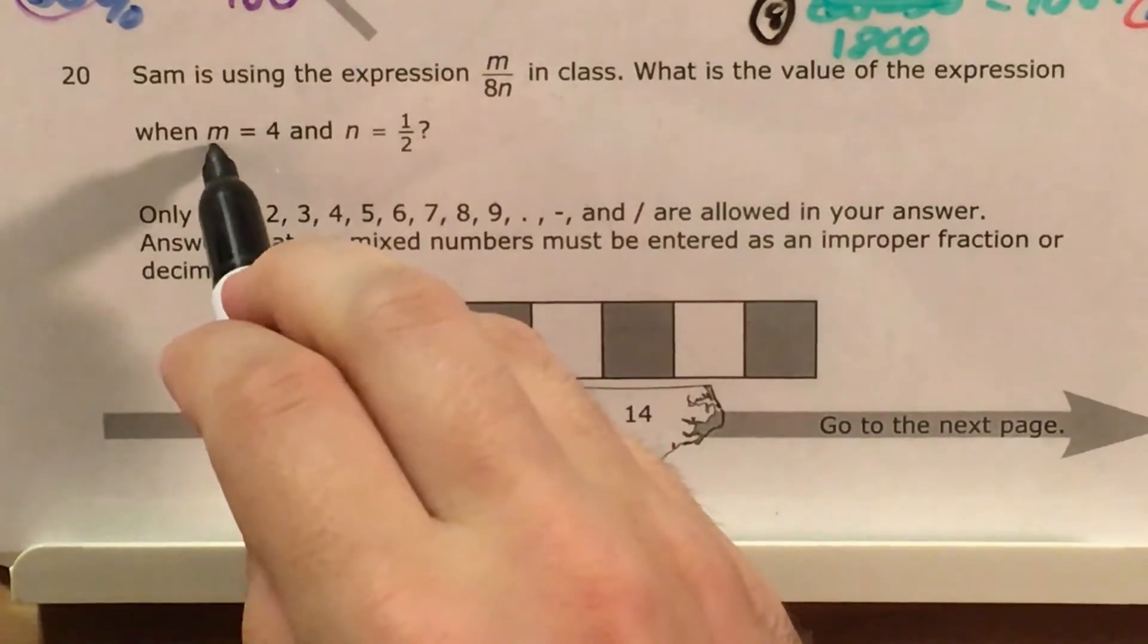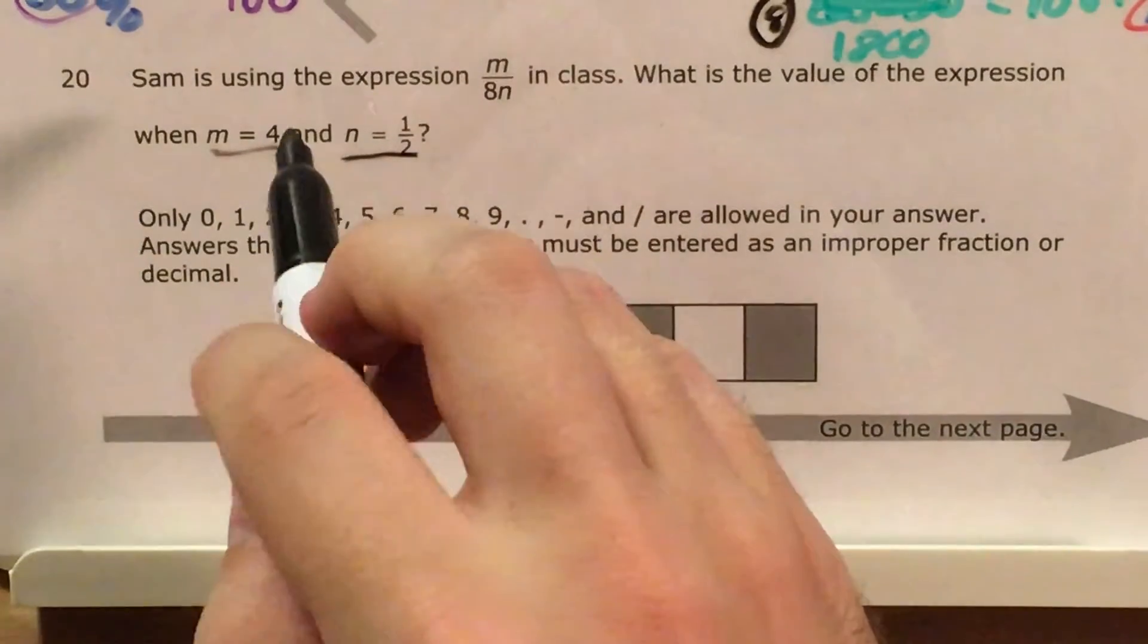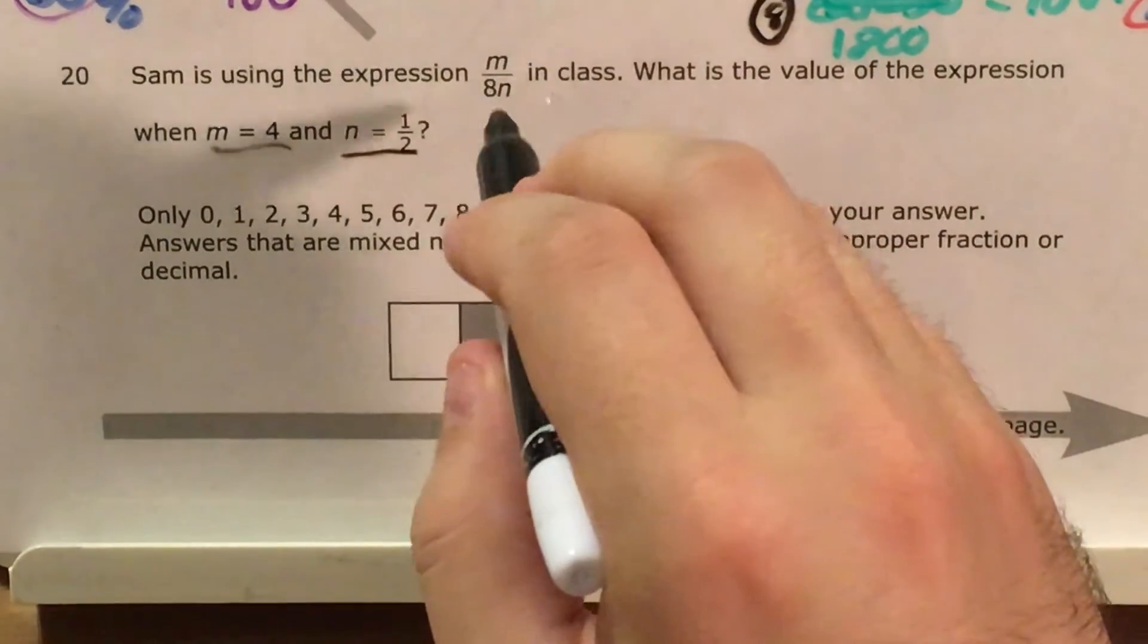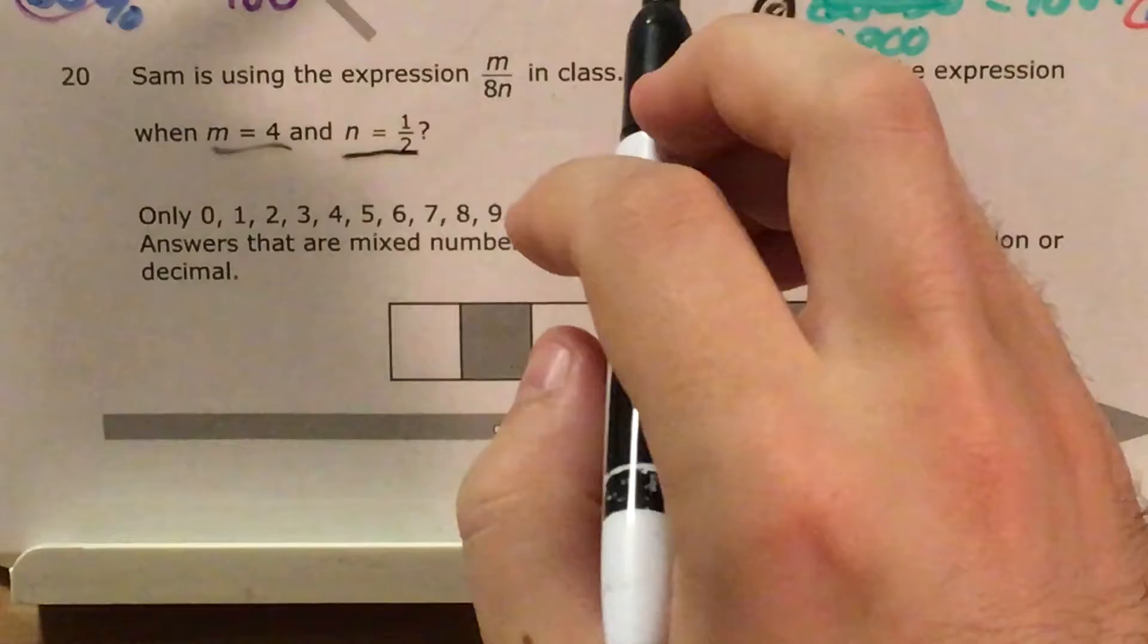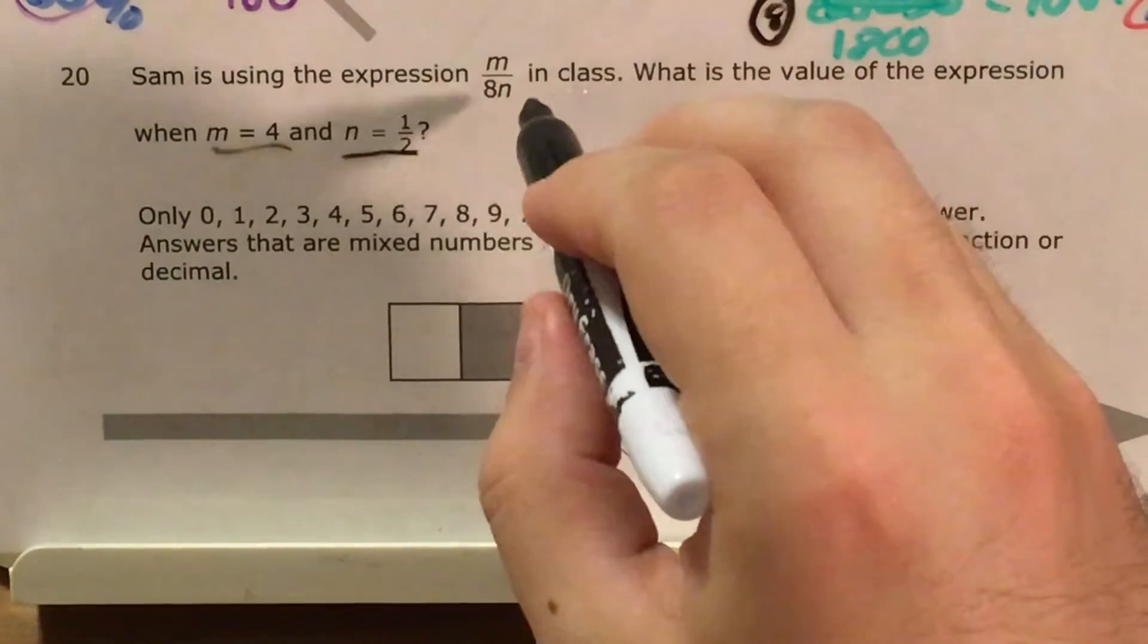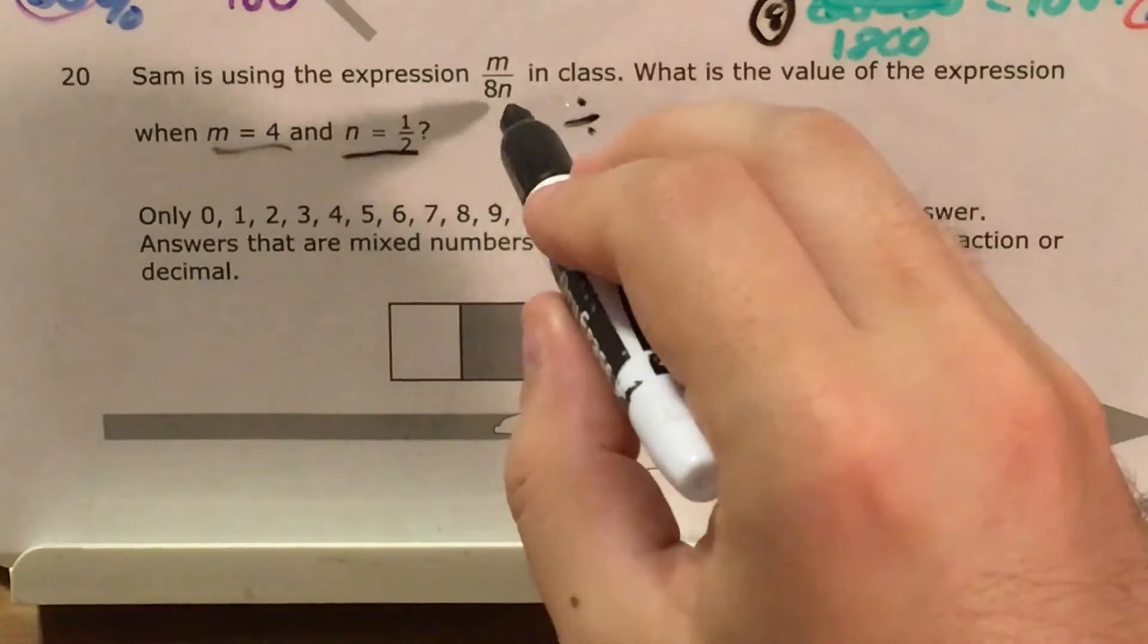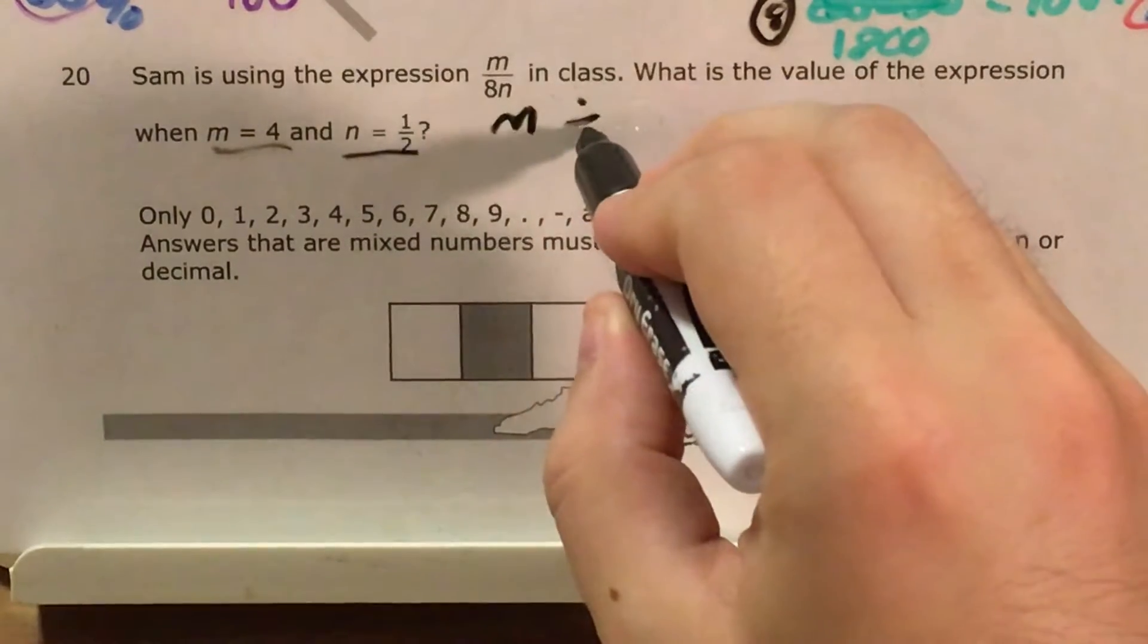First thing I'm going to do before I even look at these actual values that it gives me, is I'm going to go ahead and rewrite this so that it's all on one line, because sometimes it's easier to work with an expression if you do that. And I'm going to say that instead of a fraction, I'm going to divide m divided by,